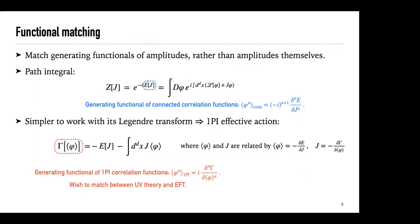The idea of functional matching is that we want to match the generating functionals of amplitudes rather than the amplitudes themselves. The most familiar functional in quantum field theory is the path integral. When written as a functional of the sources J, this E[J] functional is the generating functional of connected correlation functions. In practice, it's simpler to work with the Legendre transform, which defines the 1PI effective action — the one-particle-irreducible effective action — which is the generating functional of 1PI correlation functions. This is the quantity we wish to match between the UV theory and the EFT.